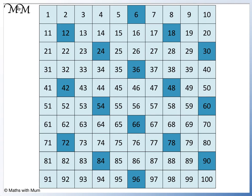6 is a multiple of 3, which means that all multiples of 6 are also multiples of 3. We can use these facts to help us identify multiples of 6. If a number is both even and a multiple of 3, it will be a multiple of 6.